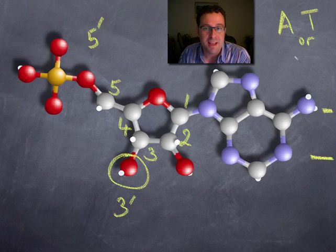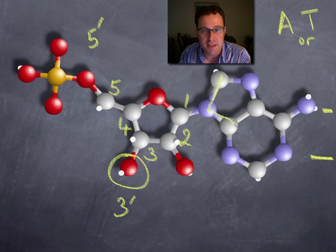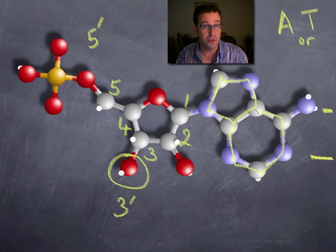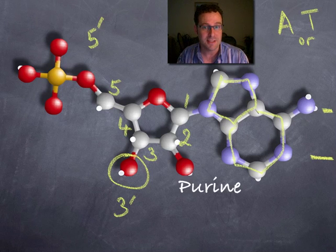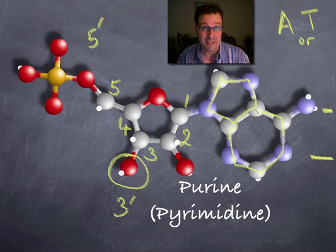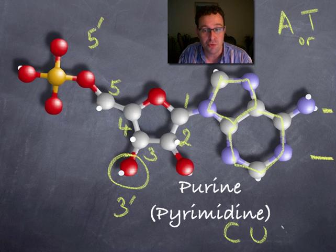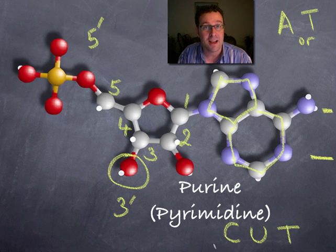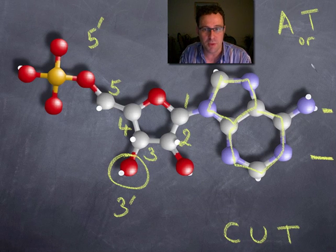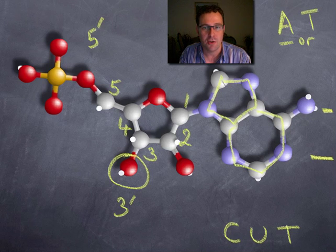Well, you remember that some of the bases have two rings in them, like this one does. You can see there's one ring there and one ring here. And the ones with two rings like that, we call purines. The ones that have a single ring, we call pyrimidines. And you might remember that the bases C, U and T are the pyrimidines. This one, of course, is adenine, so it must be a purine.